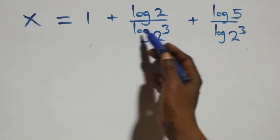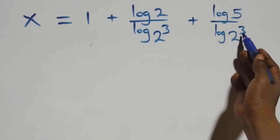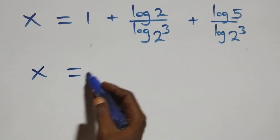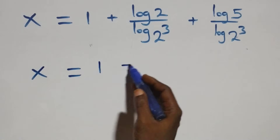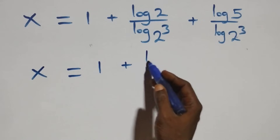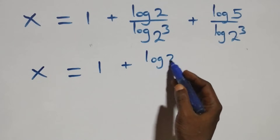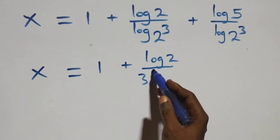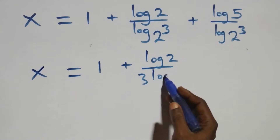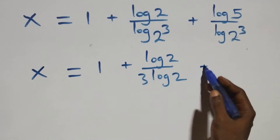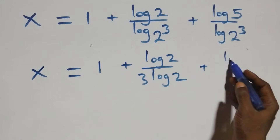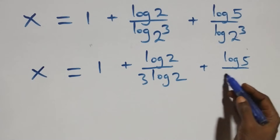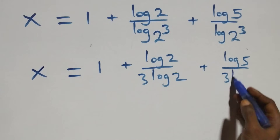We apply the power rule of logarithm to log 8, recognising that 8 equals 2 cubed, so log 8 equals 3 log 2. This gives x equals 1 plus log 2 over 3 log 2, plus log 5 over 3 log 2.